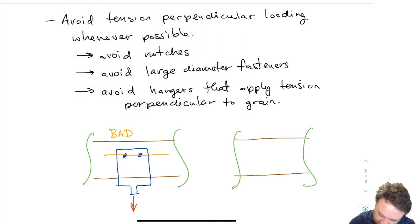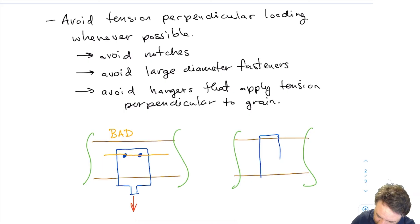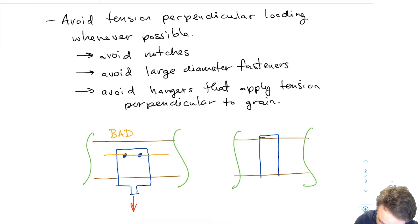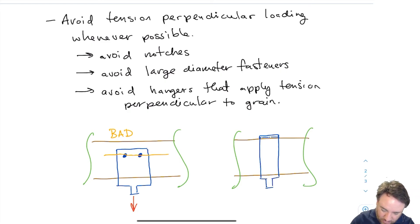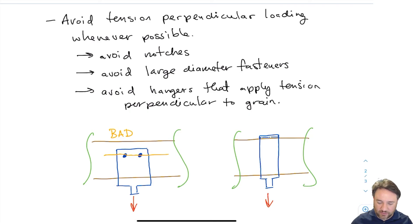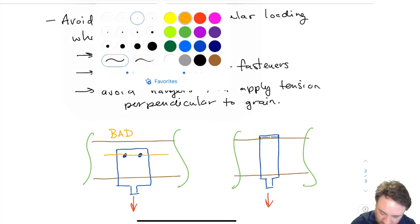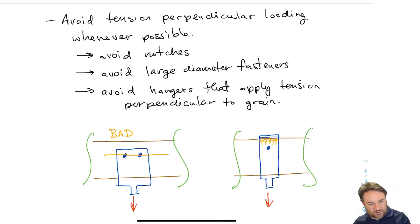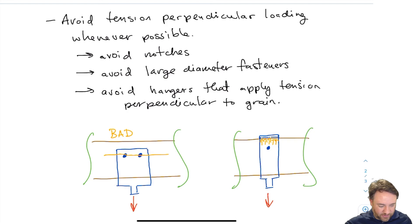A much better detail is instead of bolting to the side of the member, going over the top. If I have a U-shaped plate going over the top of the piece of wood, when I pull on it I'm not generating tension perpendicular in bolts — I'm transferring that load in compression perpendicular to grain right at the top. I'll still probably need a bolt to keep it in place, but now it's the saddle on top — not the bolt — that transfers the hanger load. That's much better.